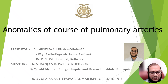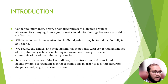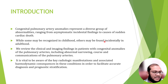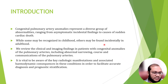My topic for this paper presentation is anomalies of course of pulmonary arteries. Congenital pulmonary artery anomaly represents a diverse group of abnormalities ranging from asymptomatic incidental finding to cause of sudden cardiac death. While some may be recognized in childhood, others may be found incidentally in adulthood. We review the clinical and imaging findings in patients with congenital anomalies of pulmonary arteries, including abnormal narrowing, course, and communication of pulmonary arteries. It is vital to be aware of key radiological manifestations and associated hemodynamic consequences in these conditions in order to facilitate accurate diagnosis and prognostic stratification.